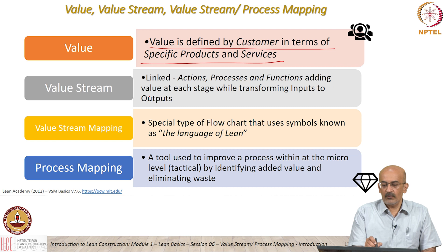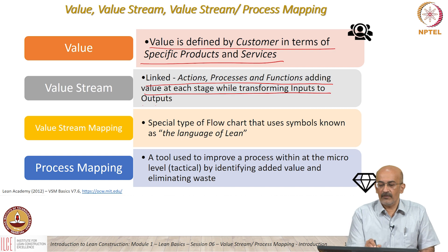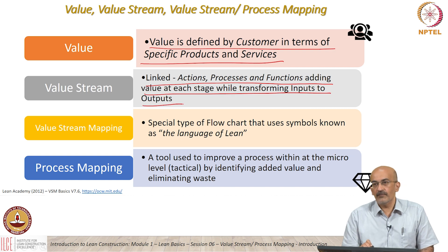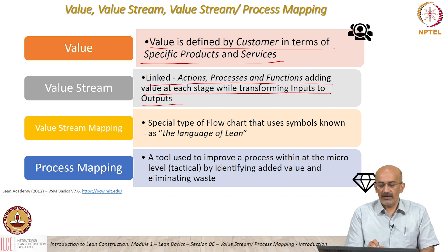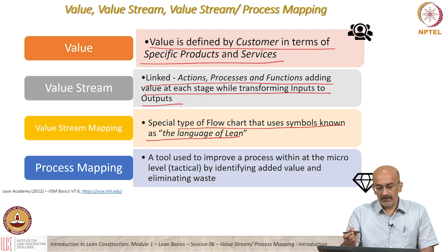Then we looked at what a value stream is. We saw it is linked actions, processes, functions, adding value at each stage while transforming inputs to outputs. Value stream mapping is a special type of flowchart that uses symbols known as the language of lean.